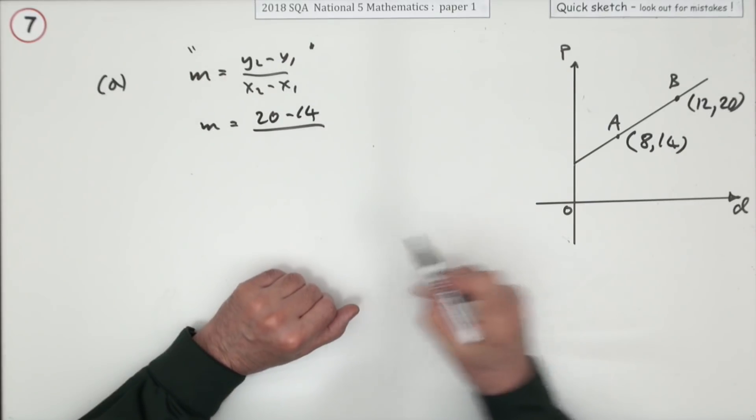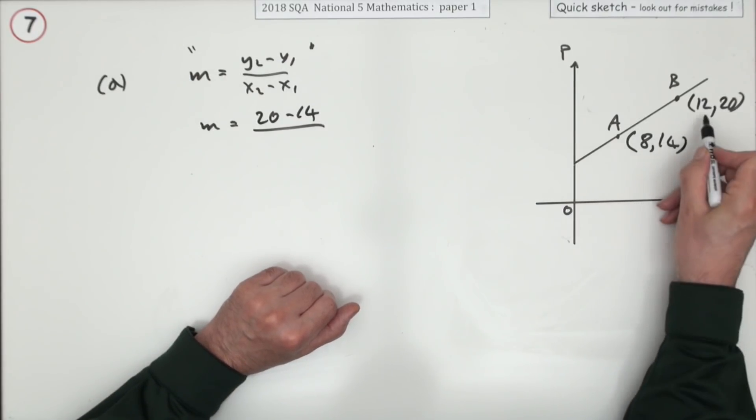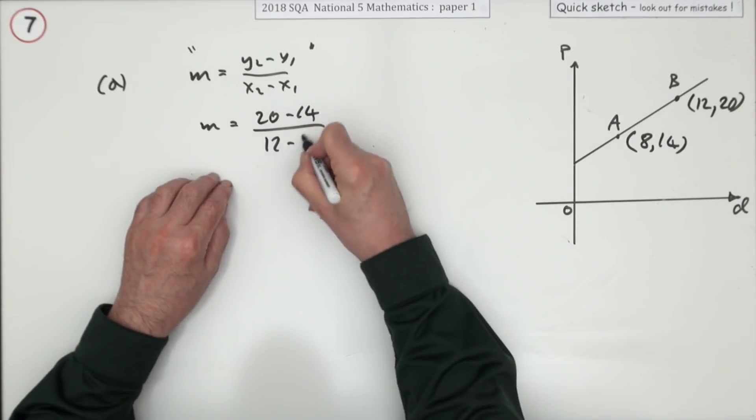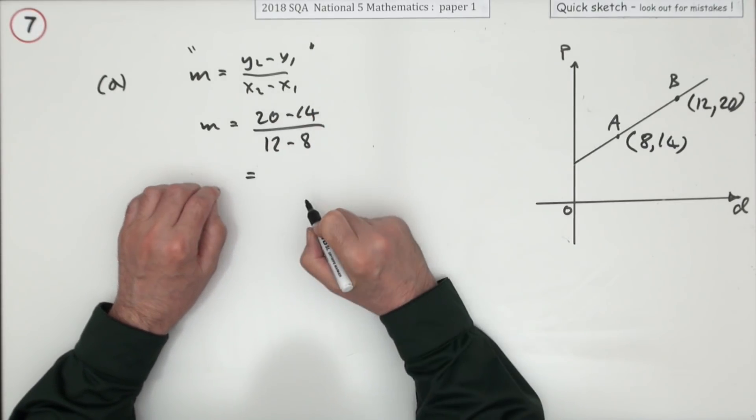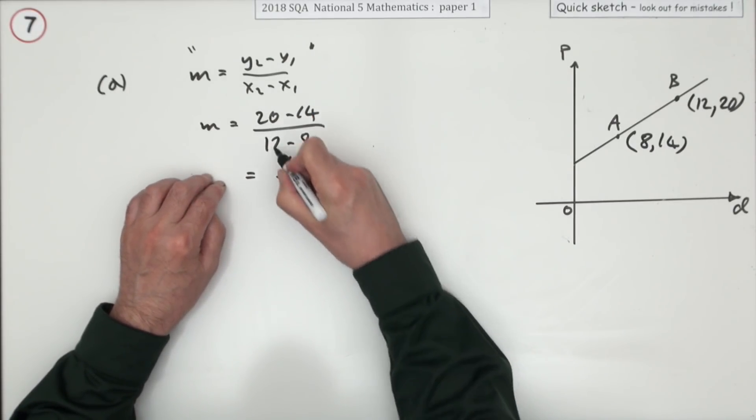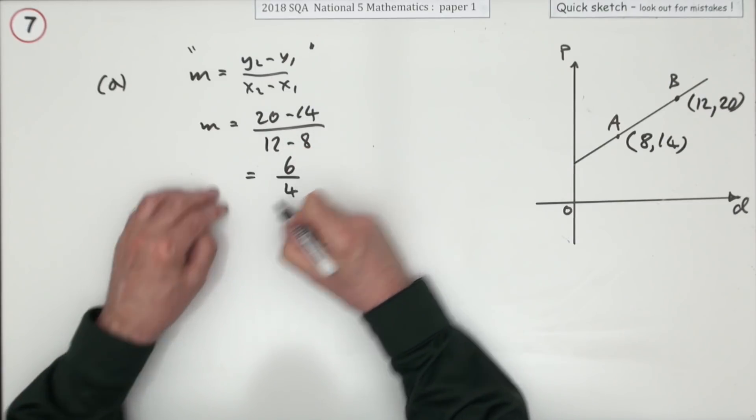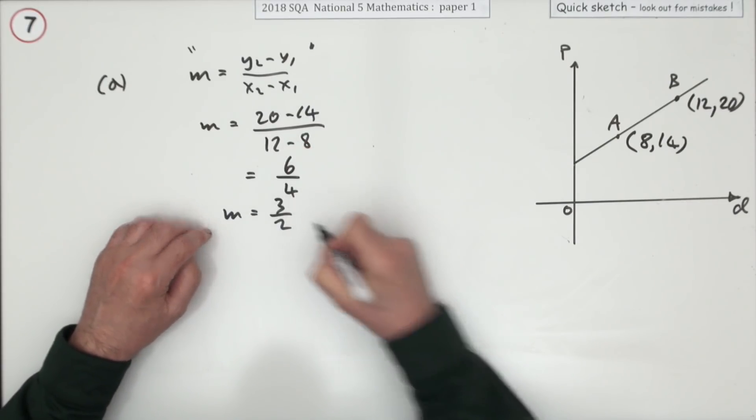Over x2 minus x1, or the equivalent of the x coordinates, 12 take away 8. Well, 20 take away 14 is 6, 12 take away 8 is 4.